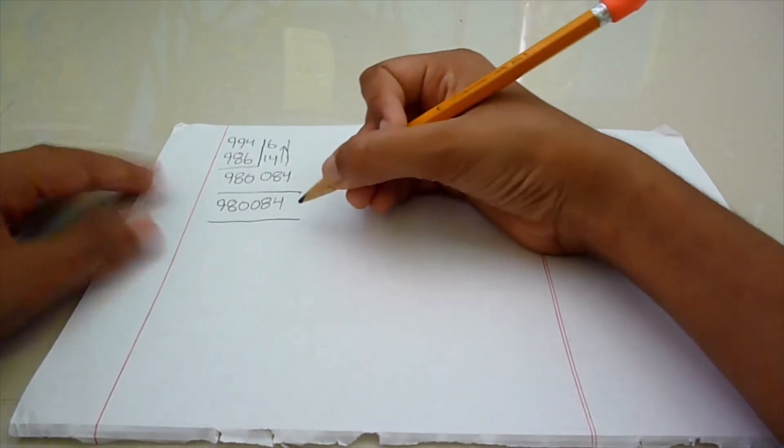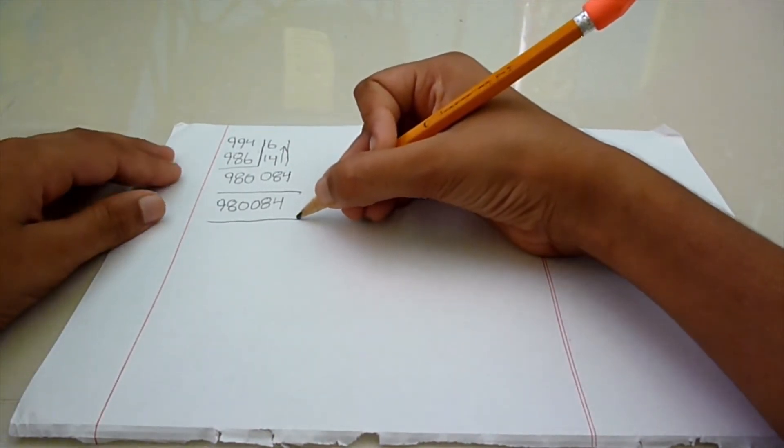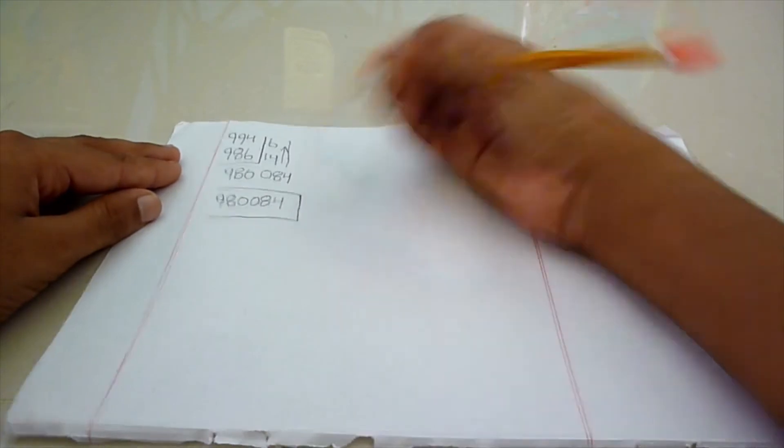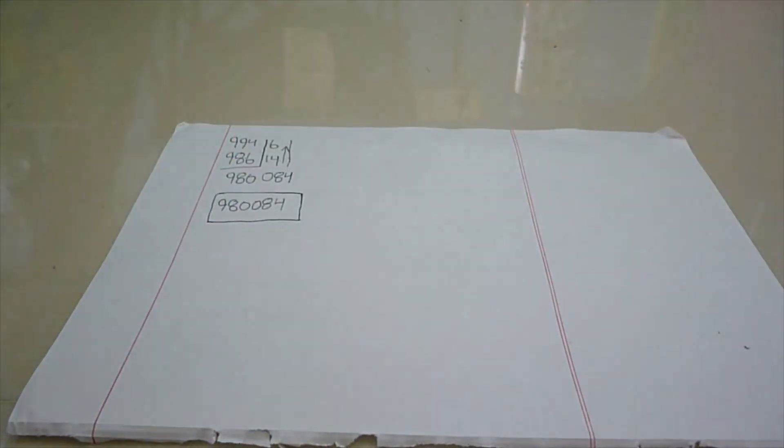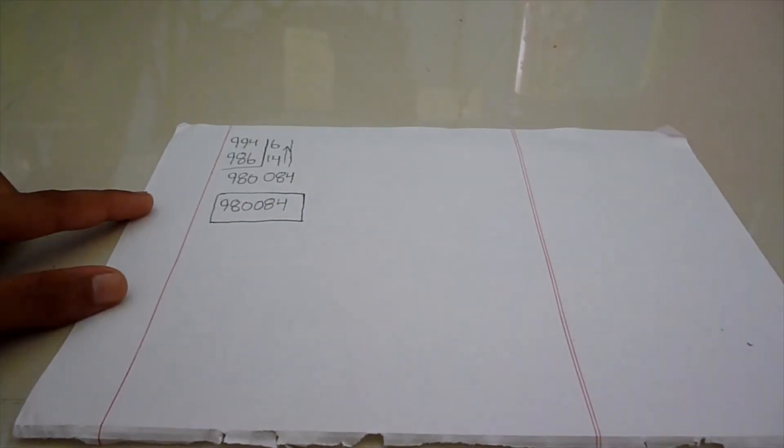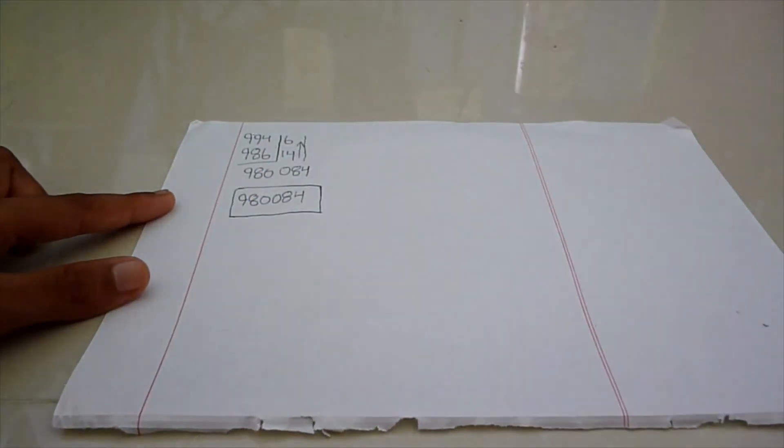We are multiplying 3-digit numbers by 3-digit numbers using the base as 1000. So, now you can multiply easily with two more examples. Second example.